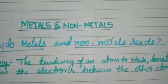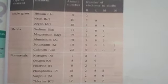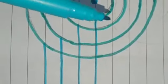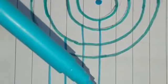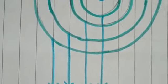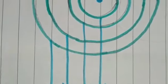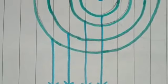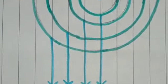Now let us look at the electronic configuration of some metals and non-metals. We have noble gases, metals, and non-metals with their atomic numbers. The nucleus is at the center and orbits are present around it — each orbit we call a shell. There are four shells: K, L, M, and N shell. Each shell has a definite maximum number of electrons: K shell holds 2, L shell holds 8, M shell holds 18, and N shell holds 32 electrons.